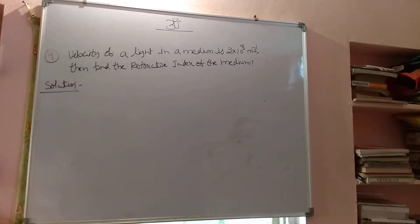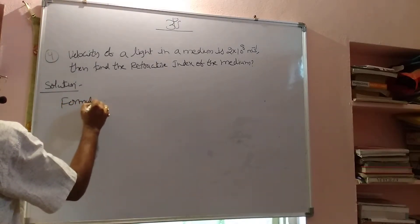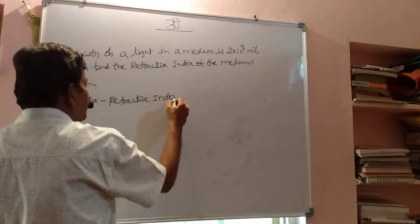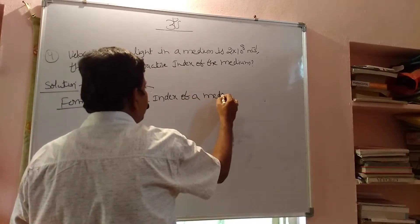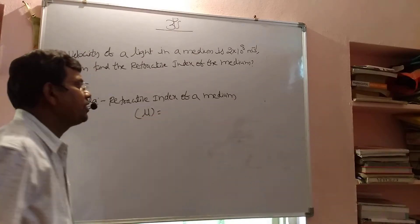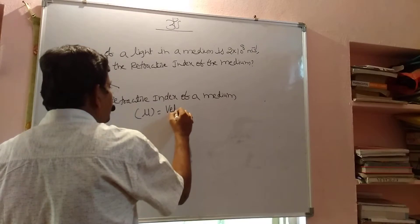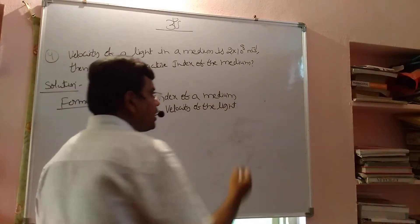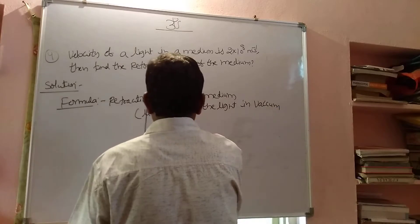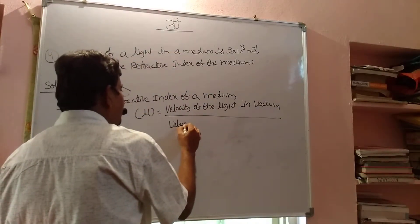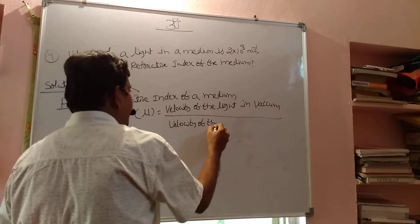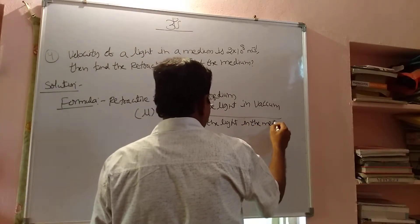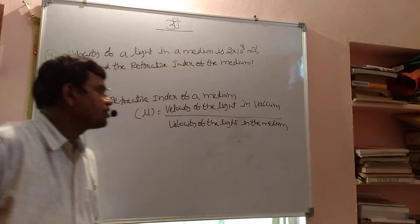We have one formula for the refractive index of a medium. The refractive index mu equals the velocity of light in vacuum divided by the velocity of light in the medium.